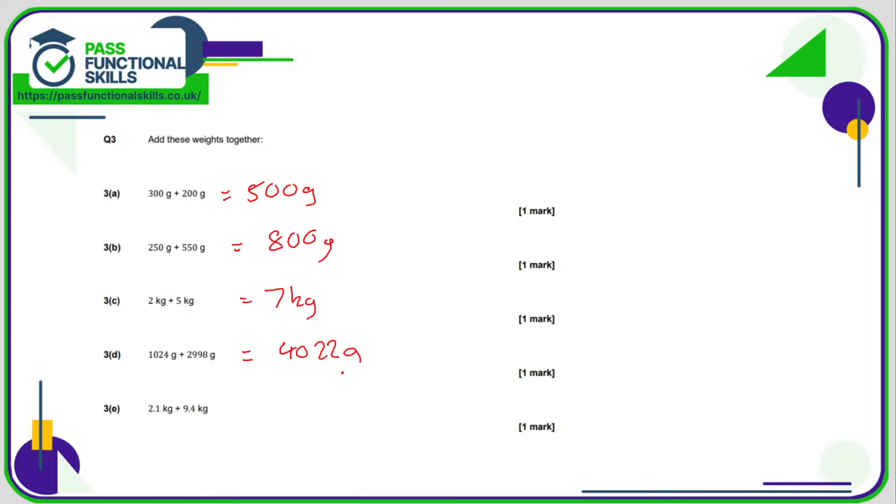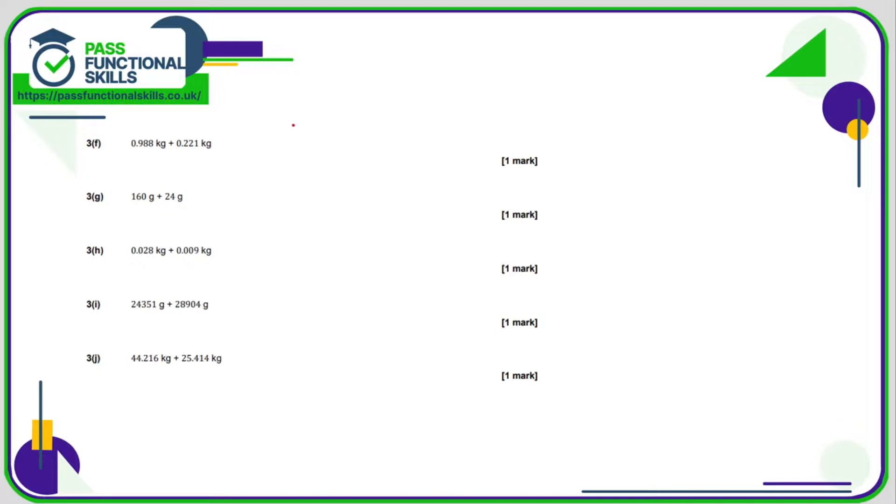D. It's okay to use a calculator. For 0.002. 2 grams. E. Is 11.5 kilos. I'm just being careful that we have the same units all the time. So far we do. F. If we add these up we're going to get 1.209 kilos. G. Is 184 grams. H. 0.037 kilos. I. Is 5.3255 grams. And J. Is 69.63 kilos.